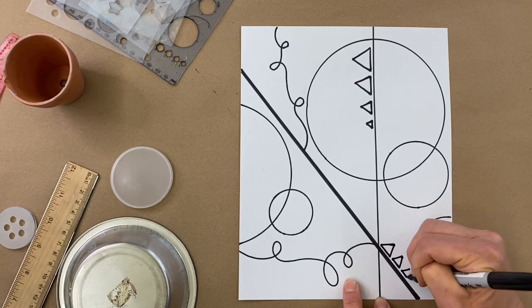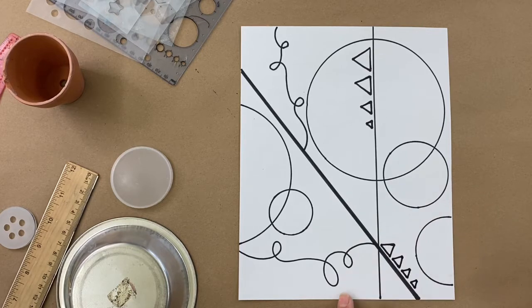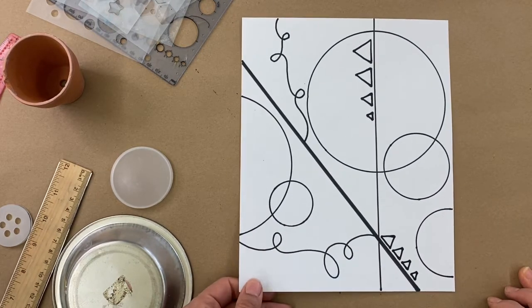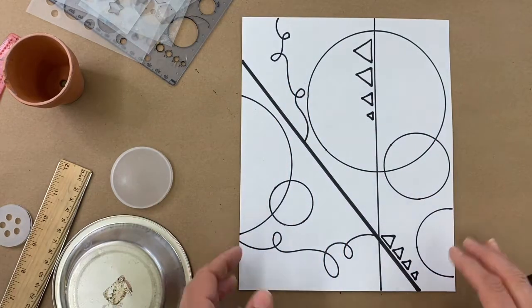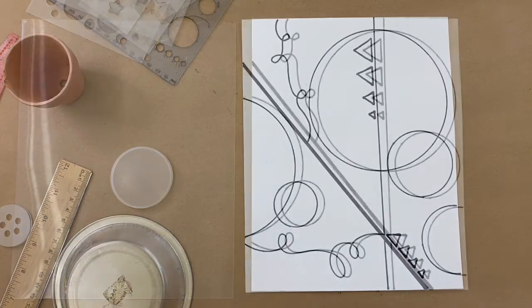And of course, you could do rectangles, hexagons, arrows, it's totally up to you. So I feel like this is a balanced design. So I'm going to pause here. And then I will show you the next step.